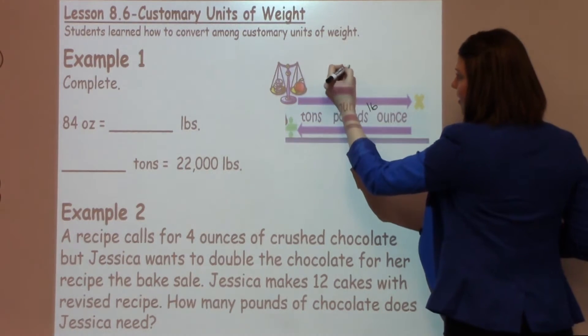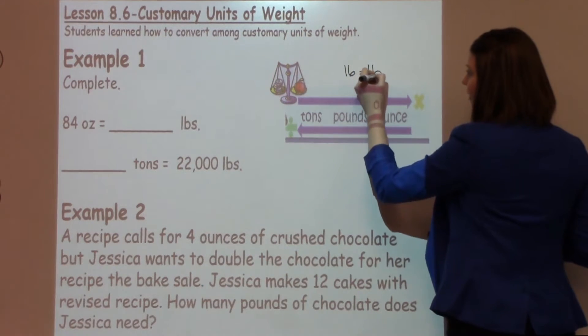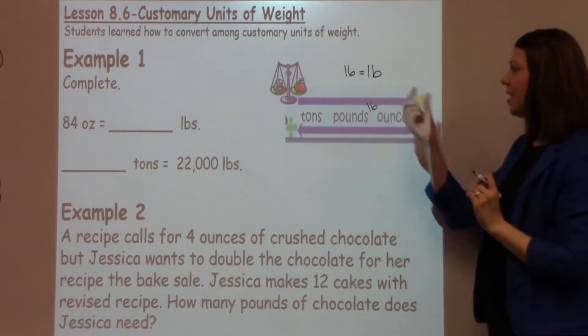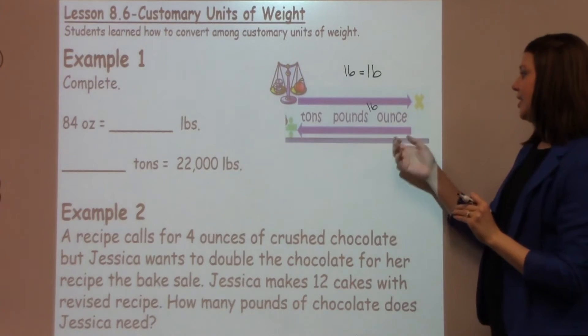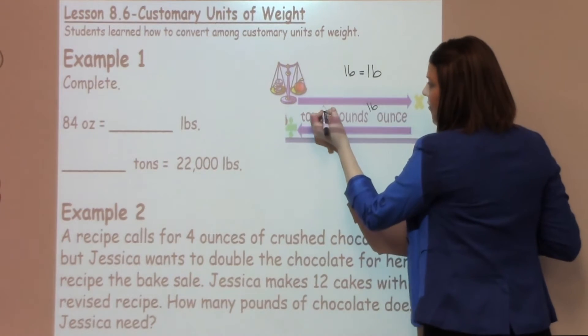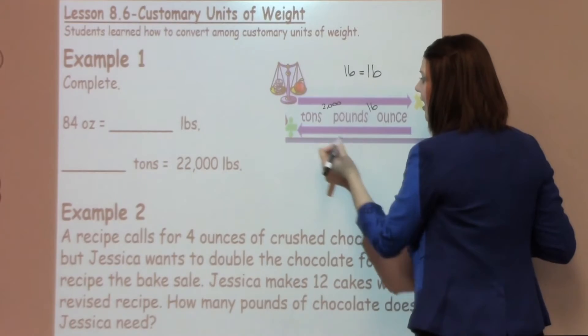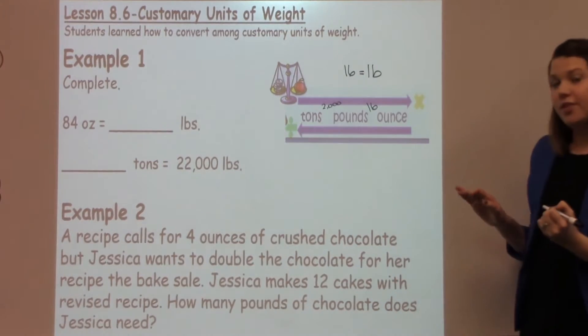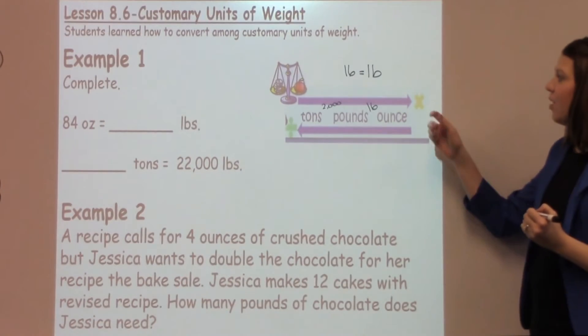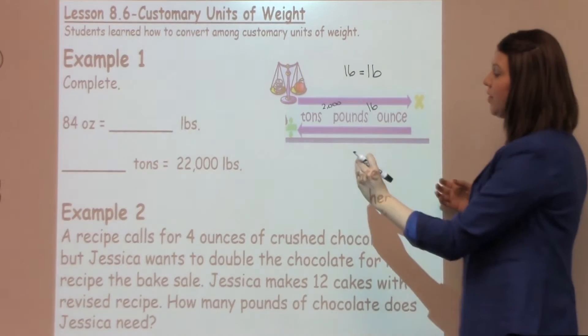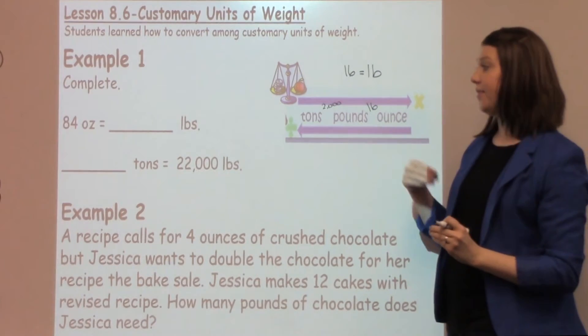We talked about there being 16 ounces in a pound. 16 ounces looks a whole lot like the abbreviation for pound, which is LB. So it's an easy way to remember that there are 16 ounces in a pound. There are 2,000 pounds in a ton, and those are the conversions that we talked about today. Noticing that depending on what direction you're moving, you're either going to need multiplying or dividing.